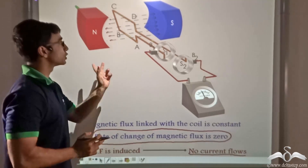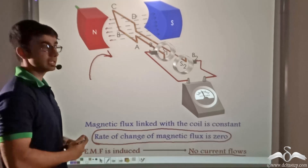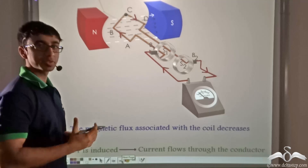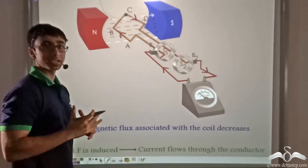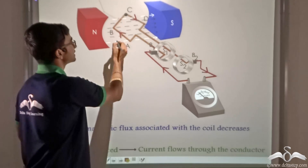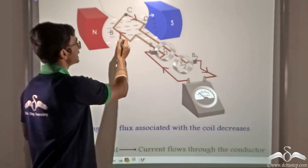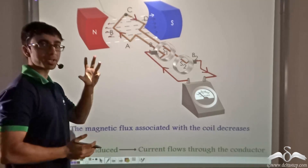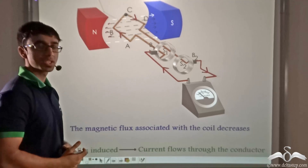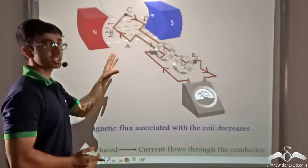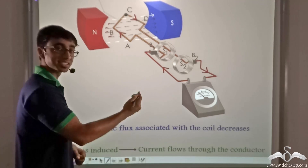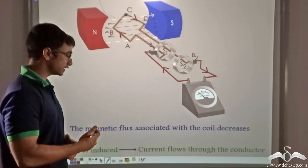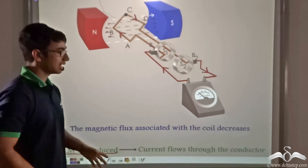Now let's see what happens if we rotate the coil in the clockwise direction. With the help of the handle, the coil is rotated clockwise. As you can clearly see, there has been a change in the number of magnetic field lines — or the magnetic flux — linked with the coil. The white lines indicate the ones not going through the coil and the black lines indicate those going through the coil. Now only four magnetic field lines are passing through the coil in place of six that were initially passing. This means there has been a reduction in the magnetic flux. So the magnetic flux associated with the coil has decreased, and due to this, an EMF is induced because this decrease has taken place at a certain rate. Since there is a rate of change of magnetic flux, EMF is induced and current flows through the conductor.